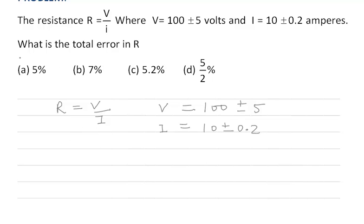We have to find out what is the total error in R. Delta R upon R into 100, that is percentage error. Why we are calculating percentage error? Because in all the four options, the values are expressed in terms of percentage.